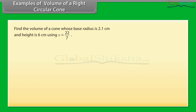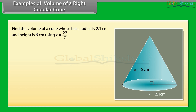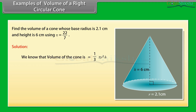Let us now solve an example. Find the volume of a cone whose base radius is 2.1 cm and height is 6 cm, using pi as 22 upon 7. We know that volume of the cone is 1 upon 3 pi r square h. Therefore, V equals 1/3 into 22/7 into 2.1 square into 6, which equals 27.72 cm cube.